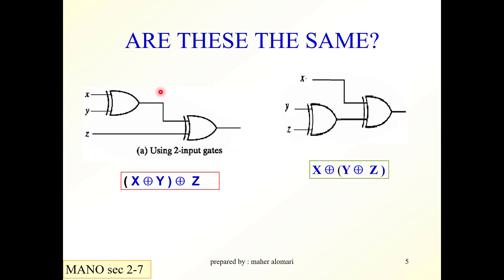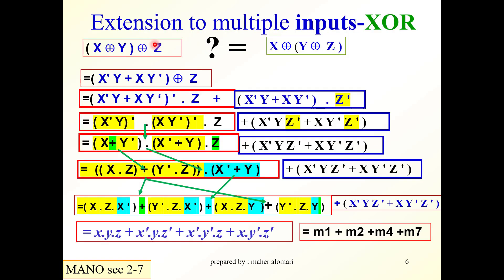The output of the first circuit is (X XOR Y) XOR Z. The output of the second circuit is X XOR (Y XOR Z). If we prove these two expressions are the same, the two circuits are equivalent. Let's verify if these expressions are equal.